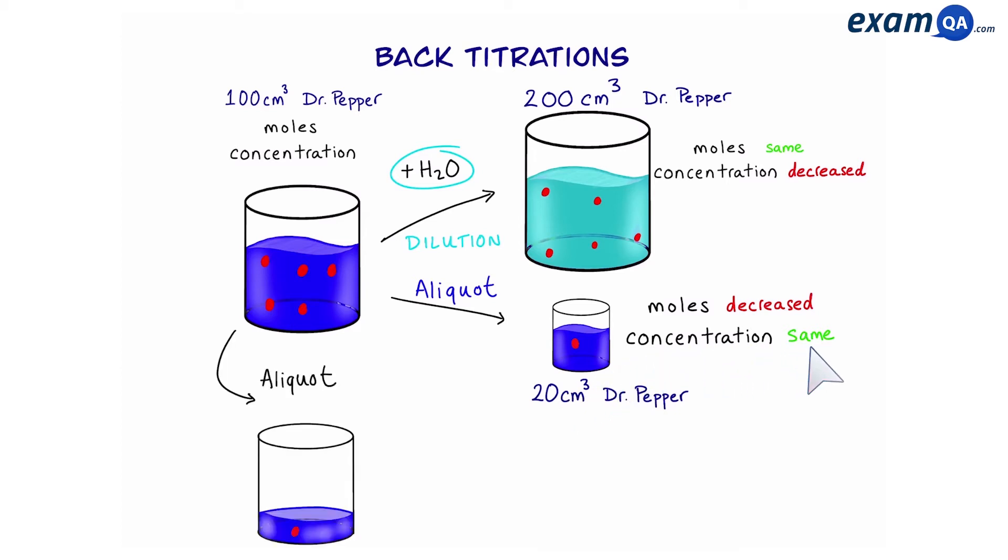Another thing that we could do is take a small aliquot and then add water to it. Here the moles will have reduced, just like in the previous example. However, because we've added water and increased the volume, that means the concentration also has decreased.